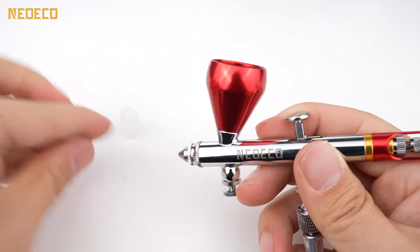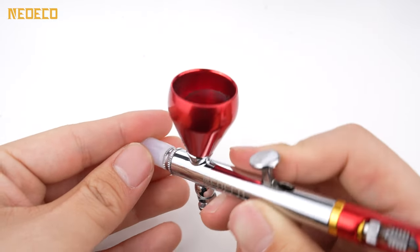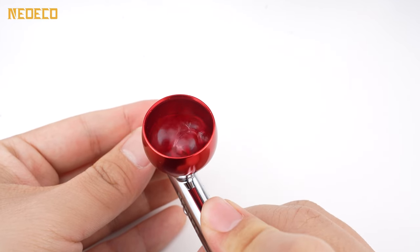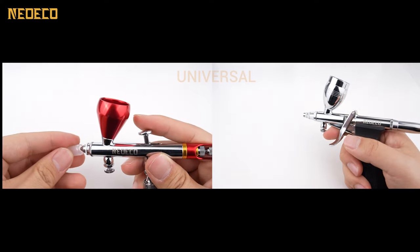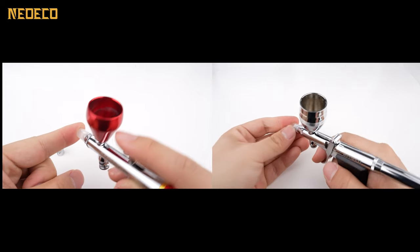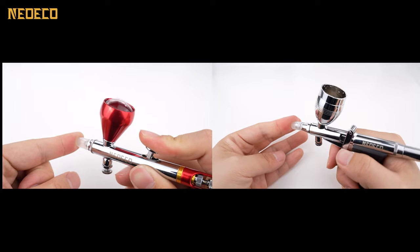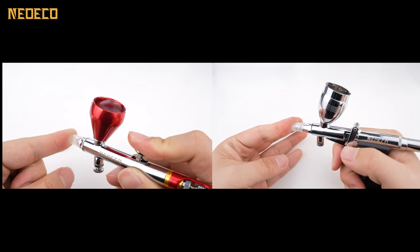When it's time to clean your airbrush, simply remove the needle cap, place the Silicone cap over it, apply pressure with your hand, and then press the trigger to induce backflow. You'll observe the cleaner bubbling, indicating effective cleaning. Not only is this method highly efficient, but the Silicone cap is also reusable, making it an indispensable tool in your airbrush maintenance kit. Give it a try and discover the convenience it brings to your cleaning routine.